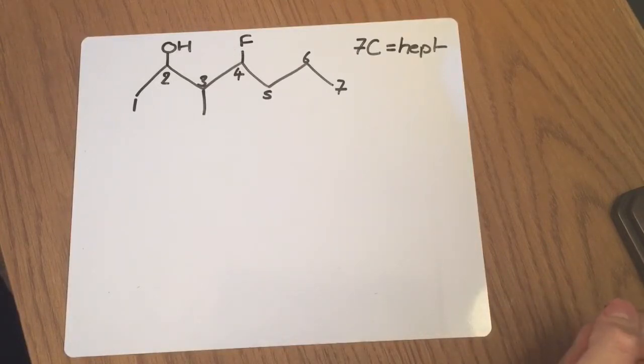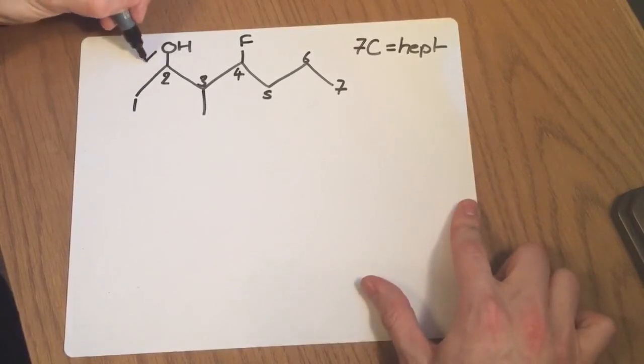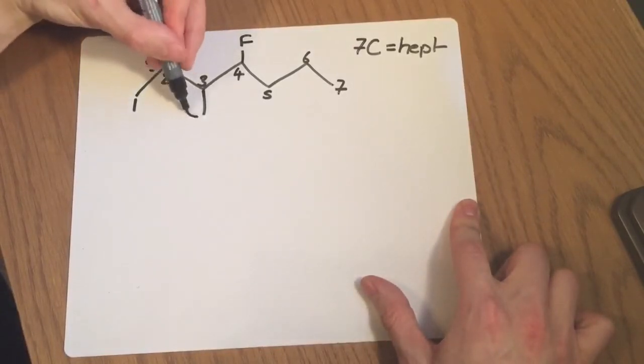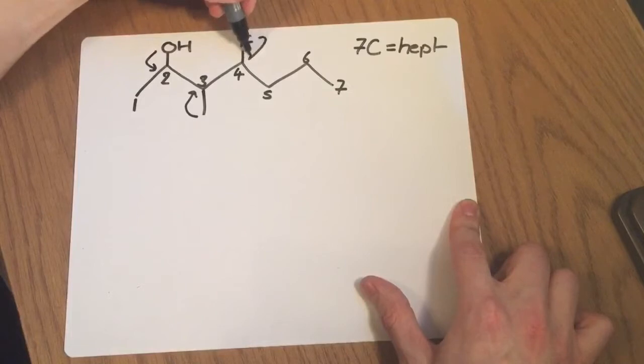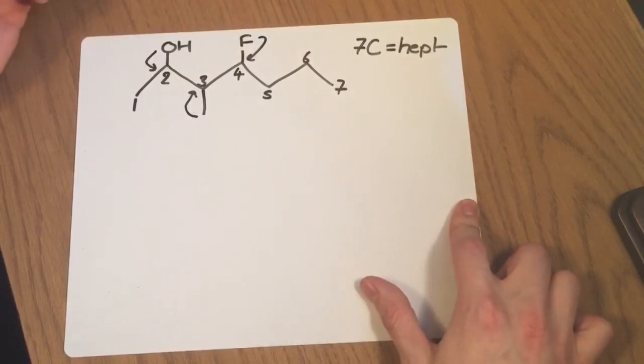What do I do now? Well now I need to look at the carbons that have got additional reactive groups on them, which are the functional groups. So I've got one at carbon two, just there. I've got something at carbon three and I've also got something at carbon four just here. So what have I got at each carbon? Let's go through them systematically.